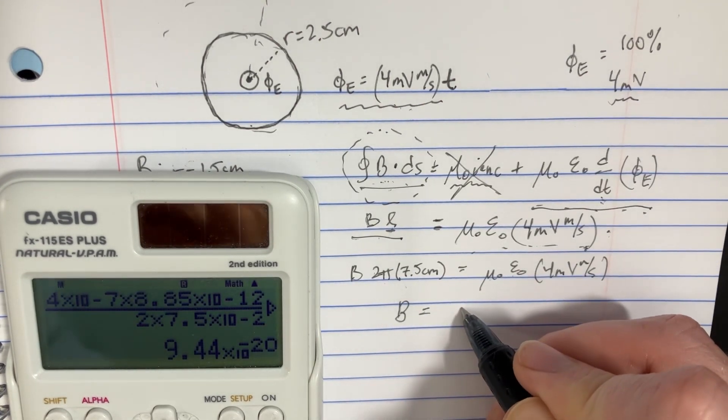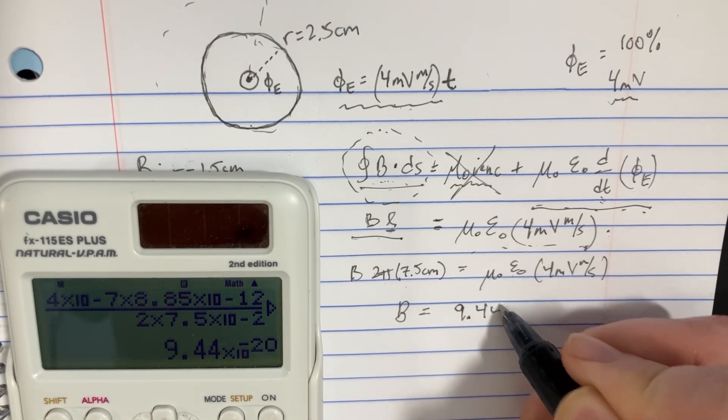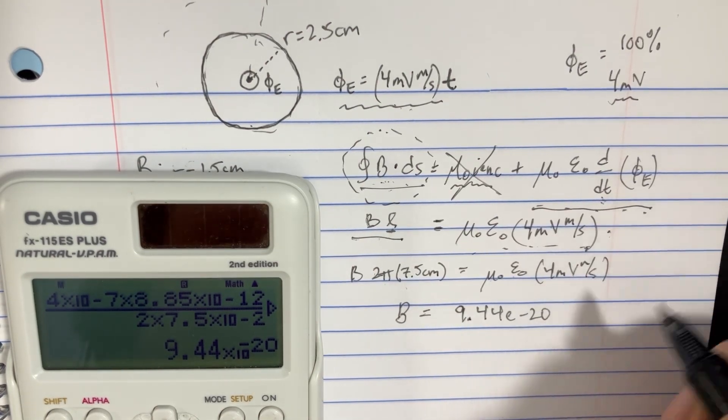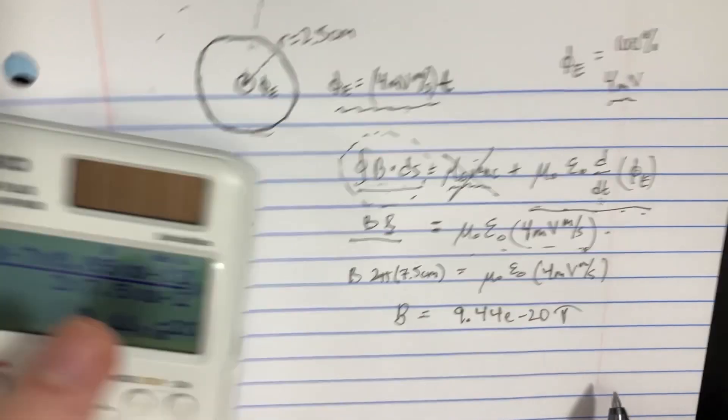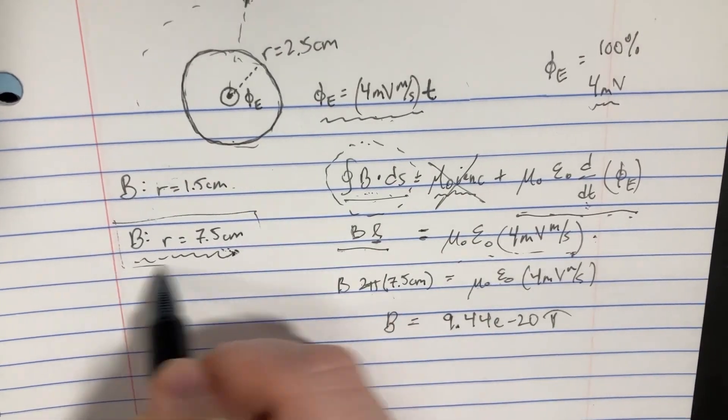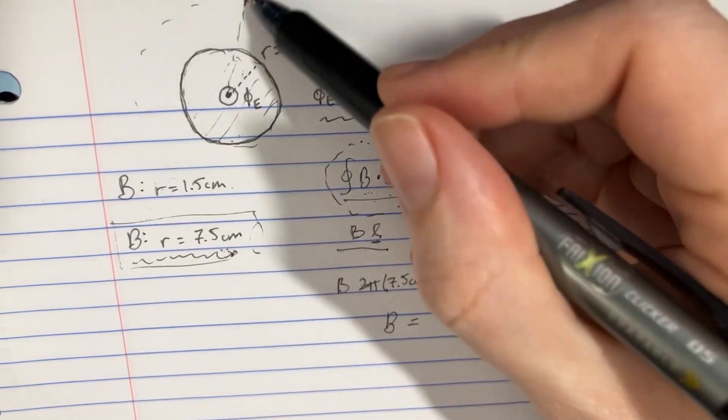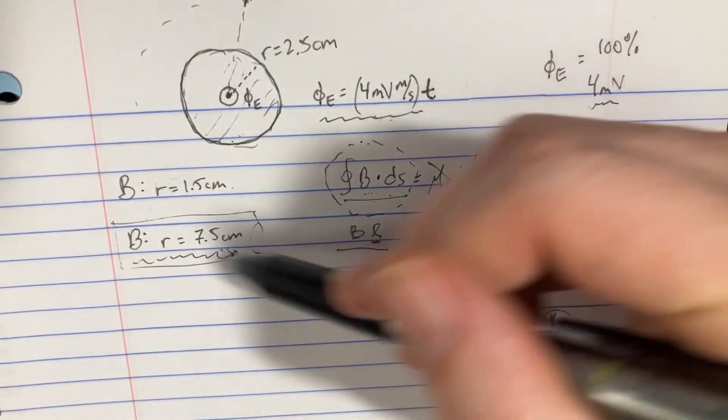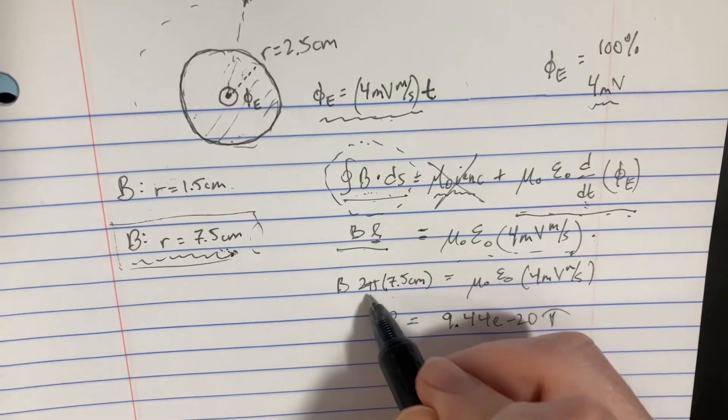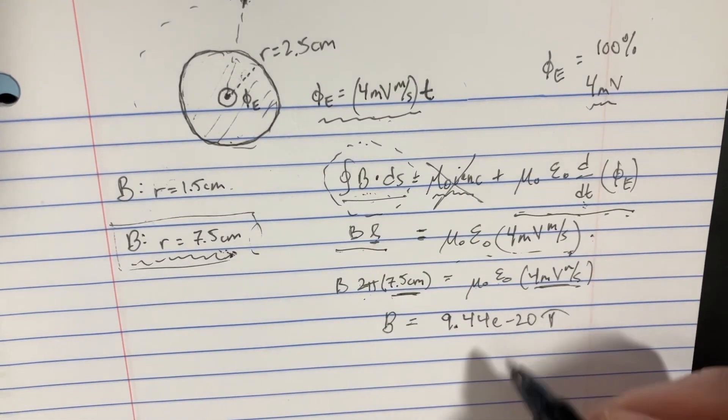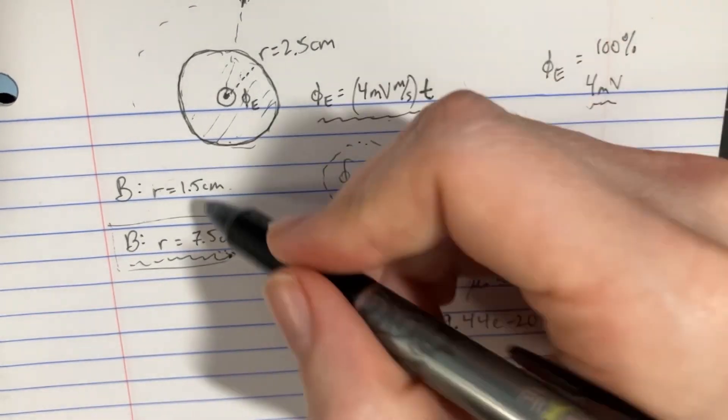So the answer to this one is going to be 9.44 times 10 to the negative 20 tesla on this side, because again, we've used the entire area. And we've checked that using the large length out here, because there's two different measurements. But anyway, let's go to this one.